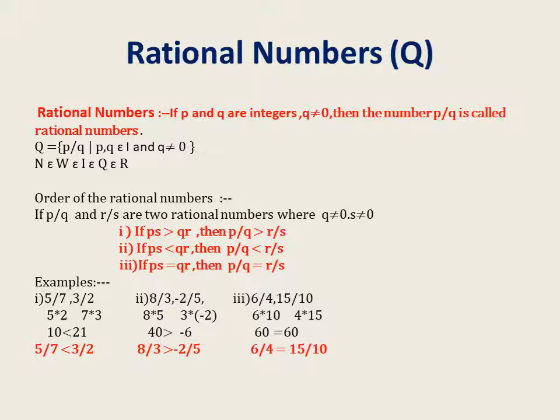From all this, natural numbers are a subset of whole numbers, whole numbers are a subset of integers, integers are a subset of rational numbers, and rational numbers are a subset of real numbers. We are studying up to real numbers in this lesson.